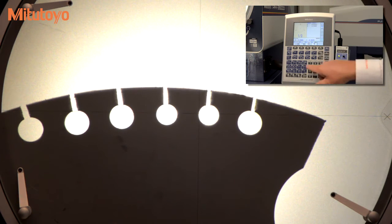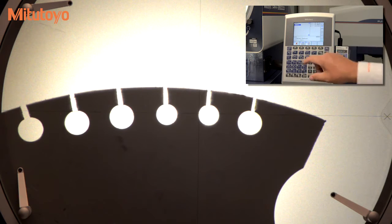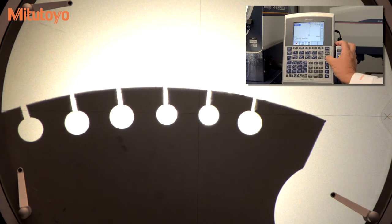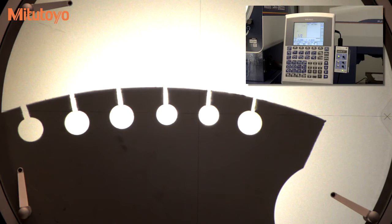Now, select the line function and recall the last two features that you have measured. The optional QM Data 200 will use the centers of the circles just measured and calculate the true distance between centers, regardless of the orientation of the coordinate system.